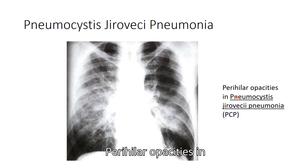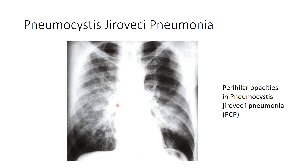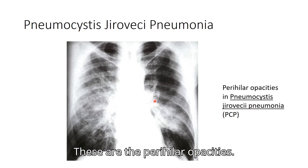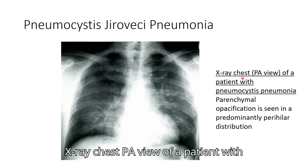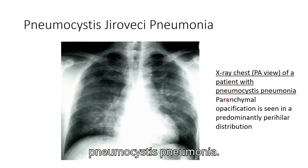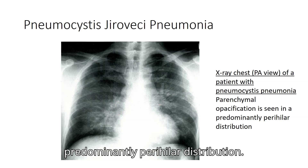Perihilar opacities in Pneumocystis jirovecii pneumonia: these are the perihilar opacities shown on a chest X-ray of a patient with Pneumocystis pneumonia. Parenchymal opacification is seen in a predominantly perihilar distribution.